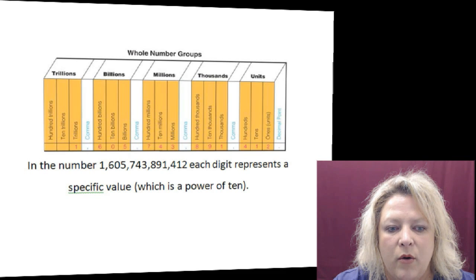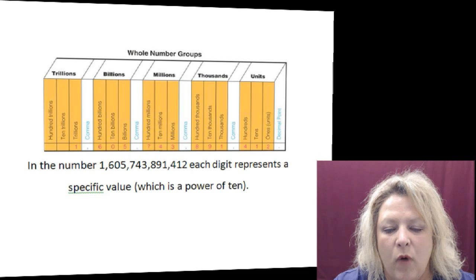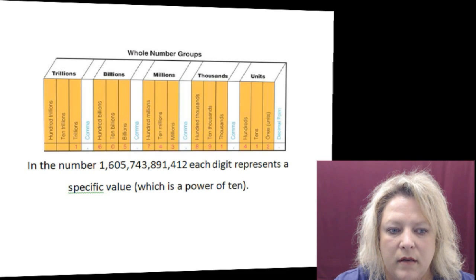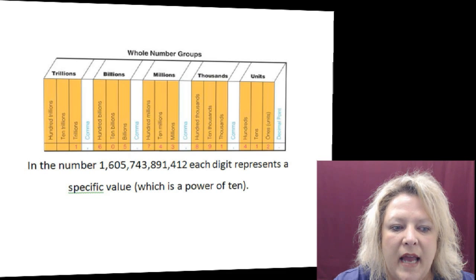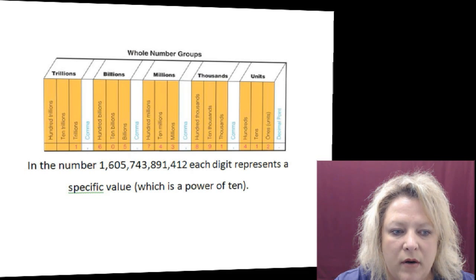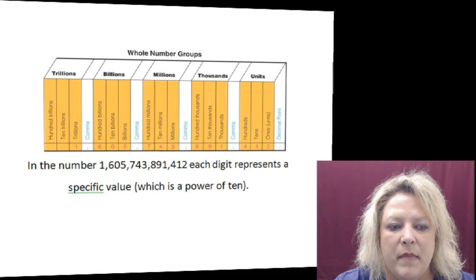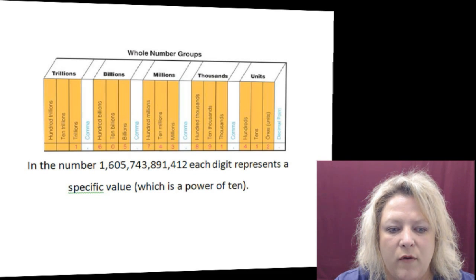So when you get to thousands, you have 1000, 10,000, 100,000. Then you have 1 million, 10 million, and 100 millions. And in this specific number that you see on the screen, it is 1,605,743,891,412.